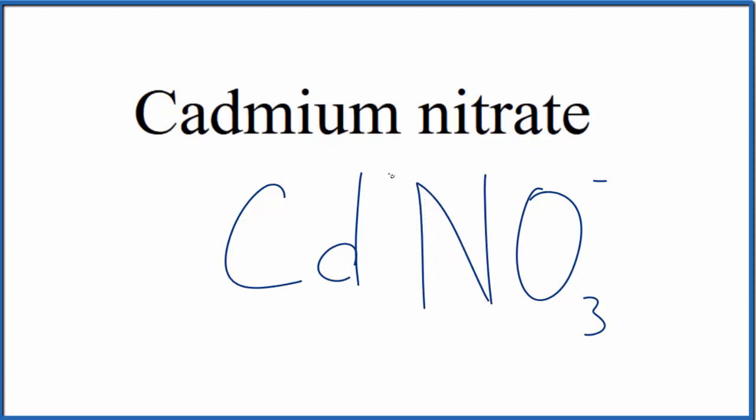So although cadmium is a transition metal, it's almost always 2 plus. And we said the whole nitrate here, this whole thing, is 1 minus. So we're going to need two of these nitrate ions here to balance this 2 plus.